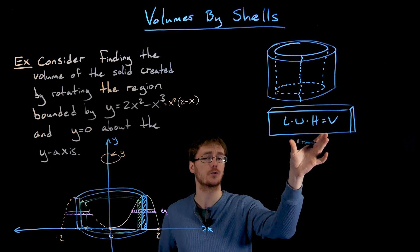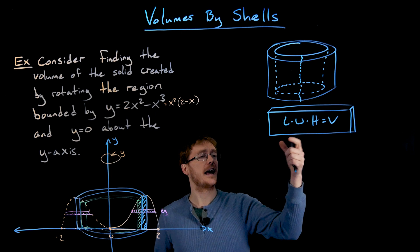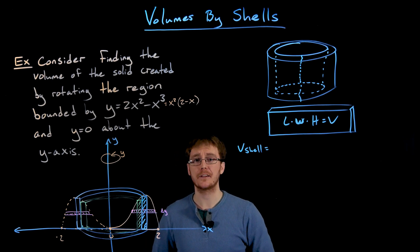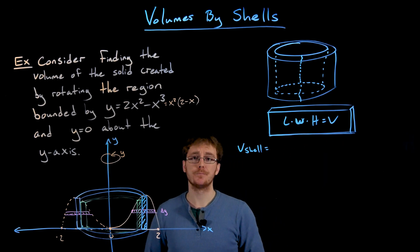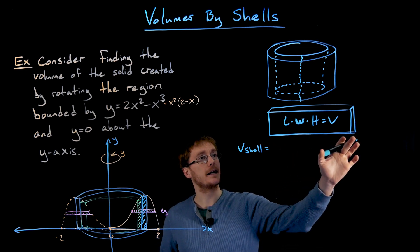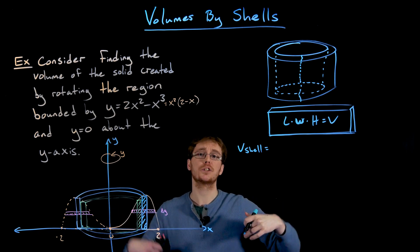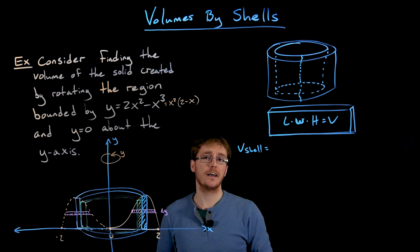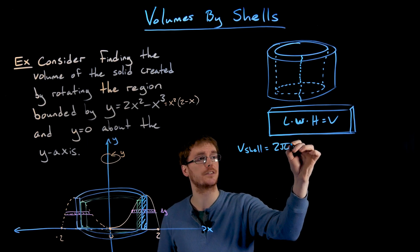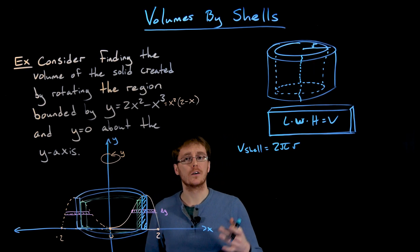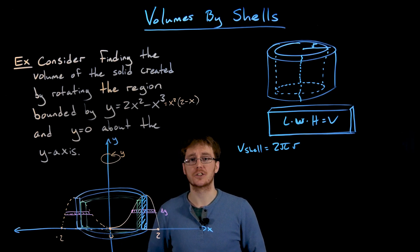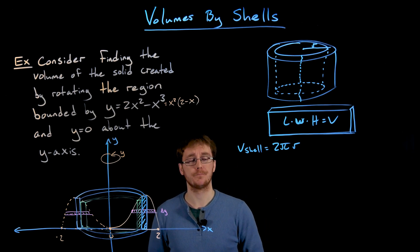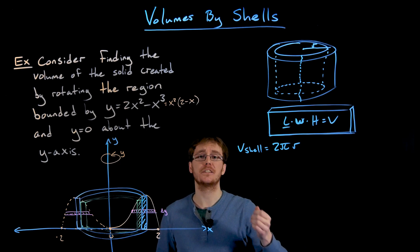To find the approximate volume of one cylindrical shell, we need to describe the length, width, and height of the unrolled rectangular prism. The length comes from unrolling the cylindrical shell — it corresponds to the original circumference of the shell. After unrolling, that circumference becomes the length, and the circumference is 2 pi times the radius. So the length of our rectangular prism is 2 pi times r.